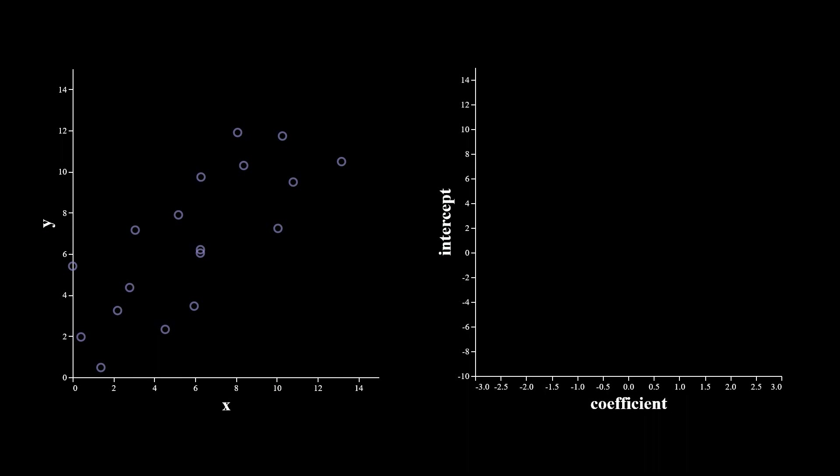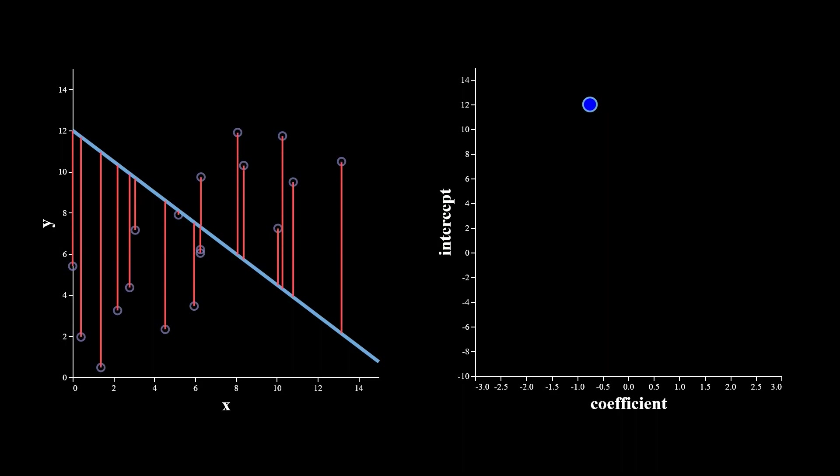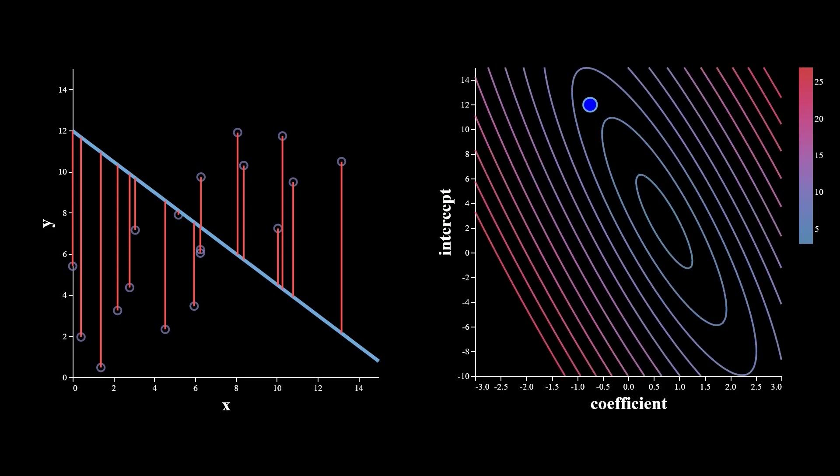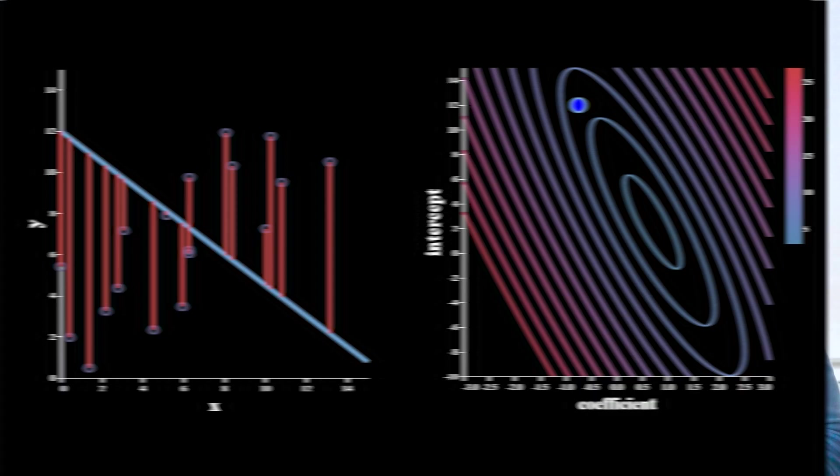A point in that space implies a particular line. So, for example, this point implies this line. At the same time, since one line in the context of this data implies a certain mean squared error, then we can think of our error metric as a function over this parameter space. In fact, we can visualize the mean squared error surface. In the general case of any parameter space and any metric, this is called the loss surface, and it's super important in machine learning.